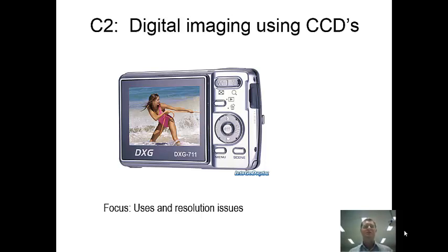Hello there. During this second session on digital imaging using CCDs, I'm going to look at some of the uses we have for CCDs. One example is the digital camera you can see in the picture here, and also think about some issues to do with resolution and how technology has overcome that to allow the brilliant images we see around us today.